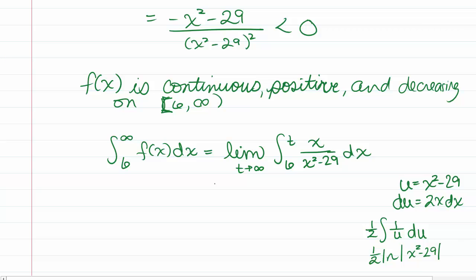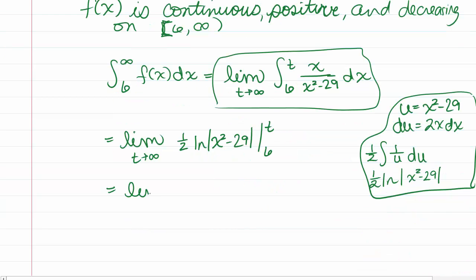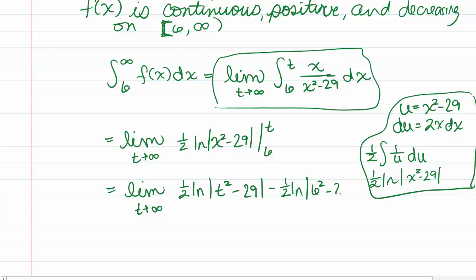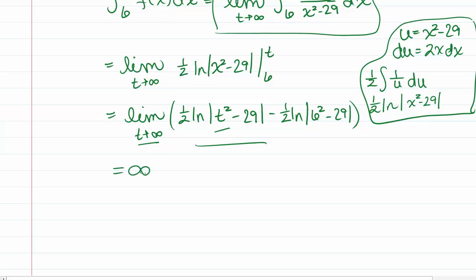Now that we know the anti-derivative, we evaluate: the limit as t goes to infinity of one-half times the natural log of the absolute value of x squared minus 29, evaluated from 6 to t. Plugging in gives the limit as t goes to infinity of one-half natural log of the absolute value of t squared minus 29, minus one-half natural log of the absolute value of 36 minus 29. As t goes to infinity, t squared goes to infinity, so the natural log also goes to infinity. So this integral diverges.